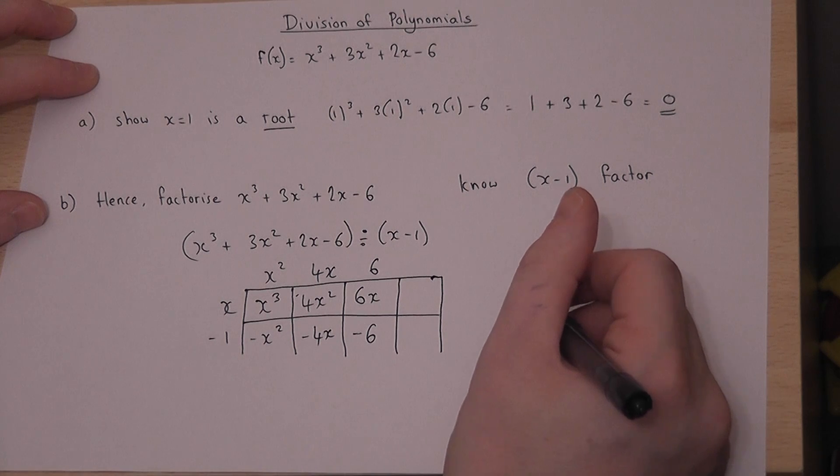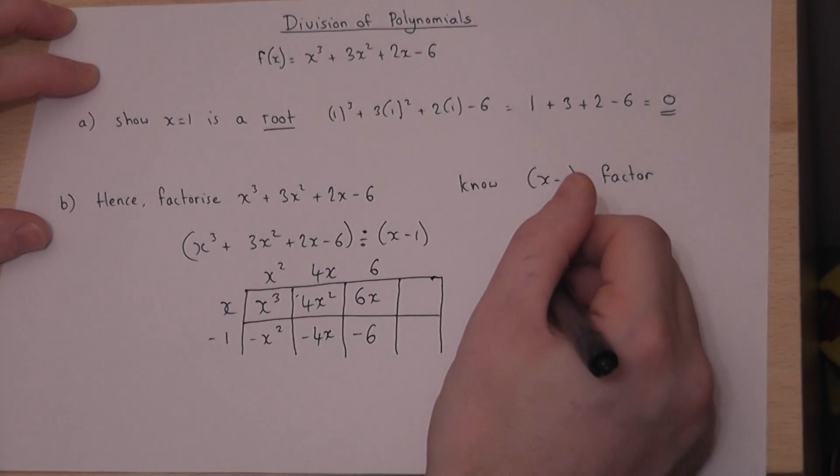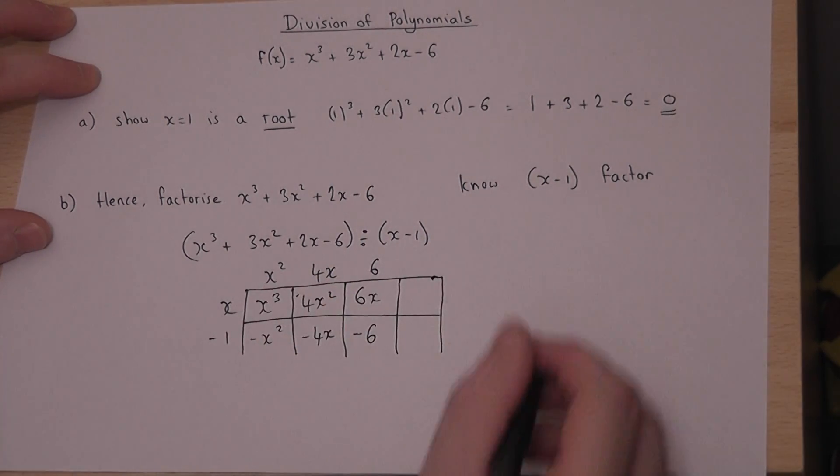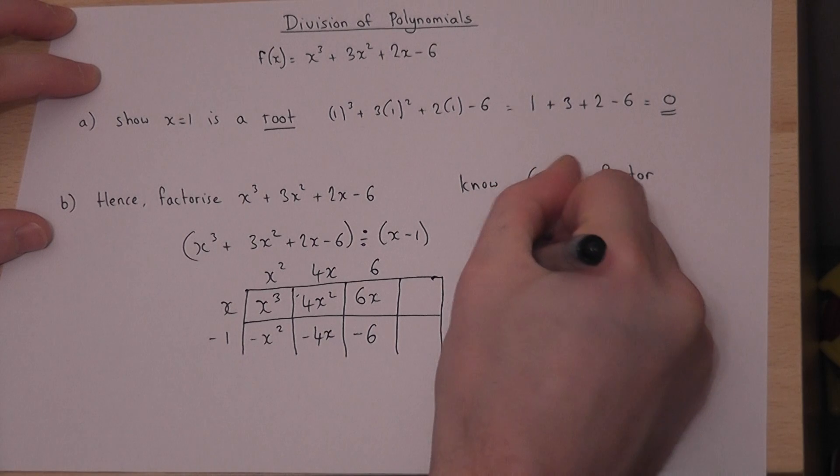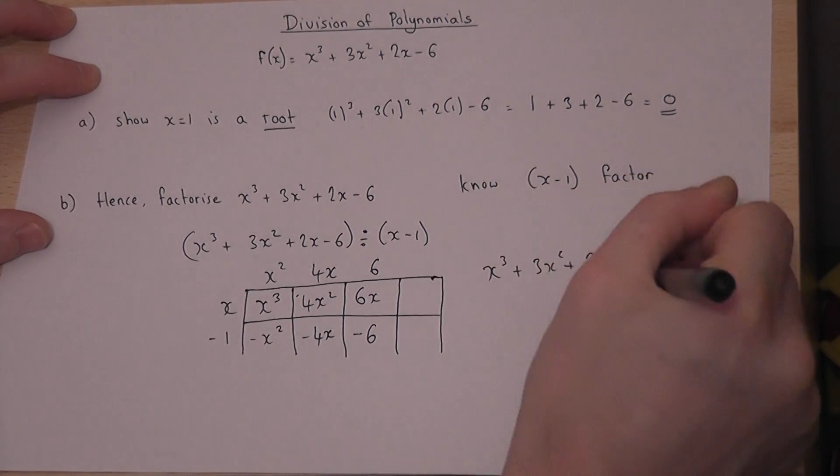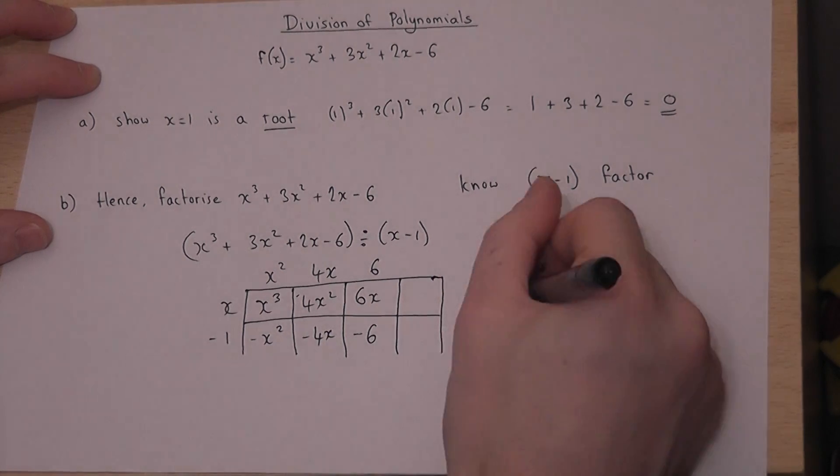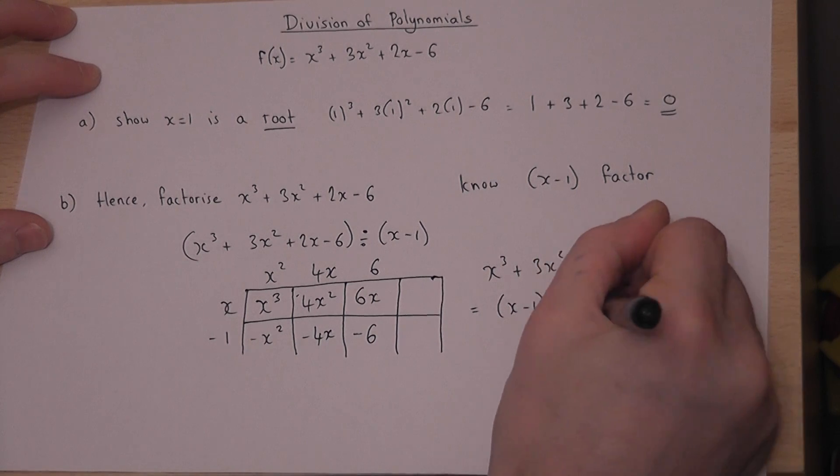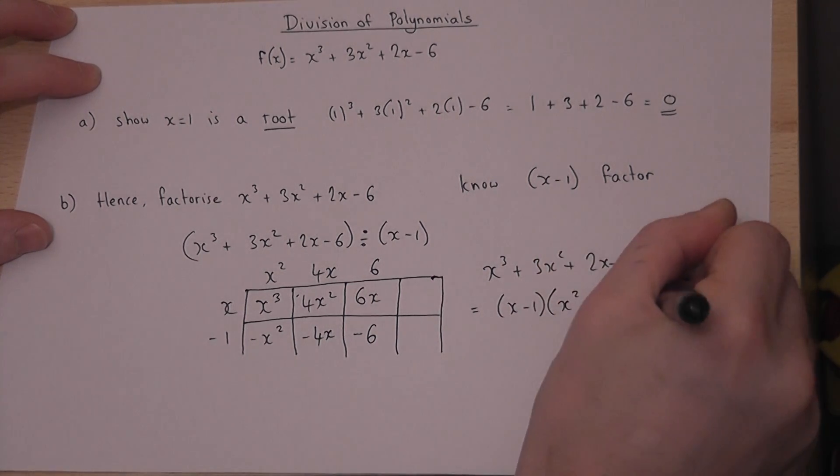So as you can see, we've got back to the required number there. So therefore our other factor is the nothing across the top. So therefore I know that x cubed plus 3x squared plus 2x minus 6 factorizes to x minus 1, our known factor, times our new factor, x squared plus 4x plus 6.